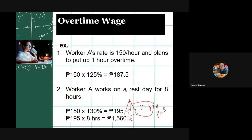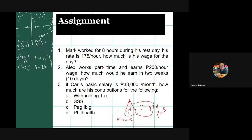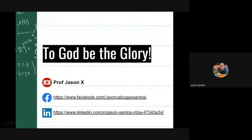For example, if Worker A works on a rest day for eight hours at a rate of 150 pesos per hour, it's 150 times 130% equals 195 pesos per hour, multiplied by 8 hours equals 1,560 pesos for that day. For your assignment, you can answer the provided questions, and if you need the answers you can message me on any of my social media platforms.